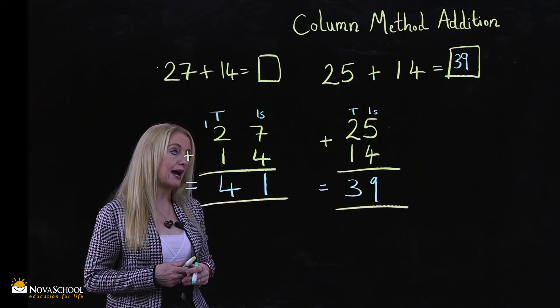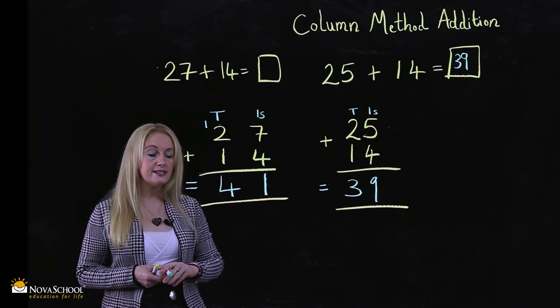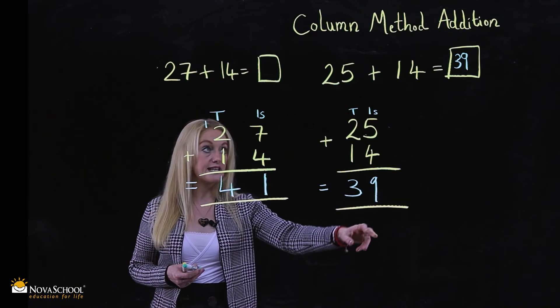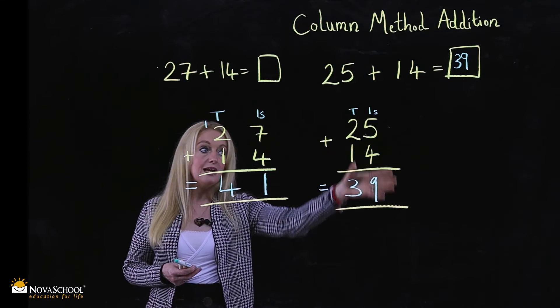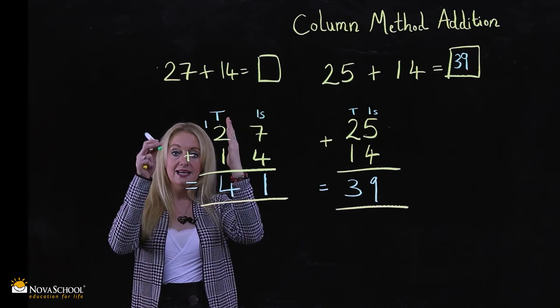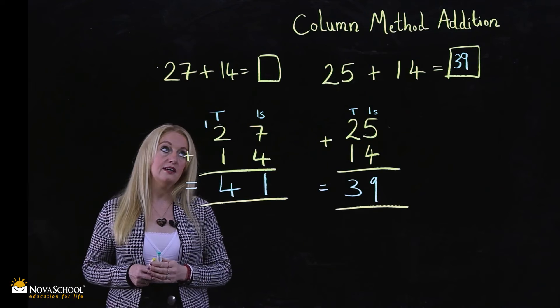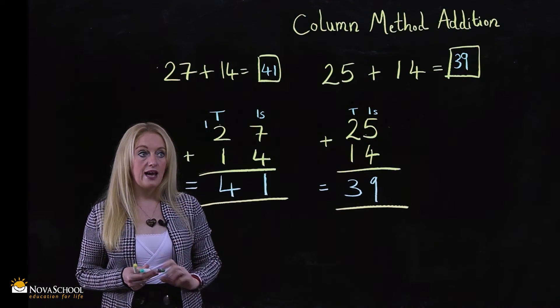So let's just recap. Column method addition. We have numbers which do not cross over the 10. So we have five add four, which is nine, two add one is three, making a calculation in column method. Numbers in columns. This one, I've shown you crosses over the 10s.